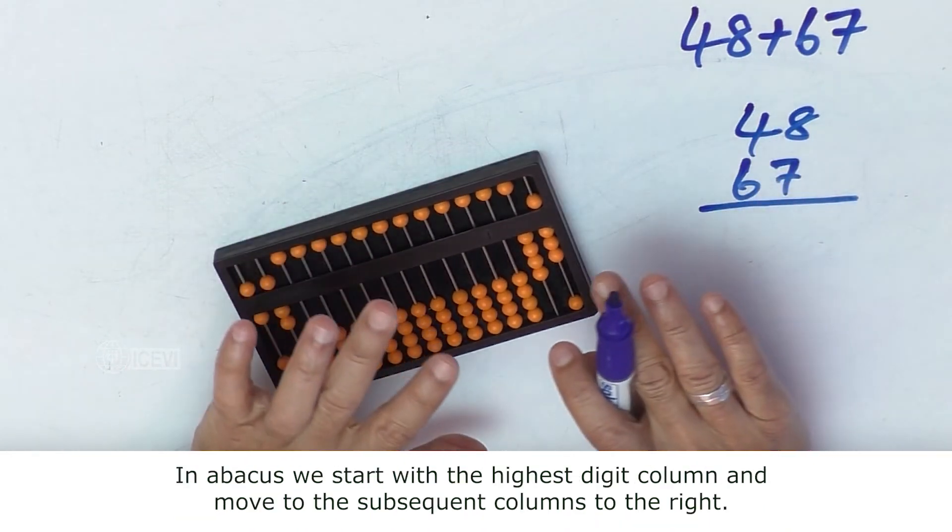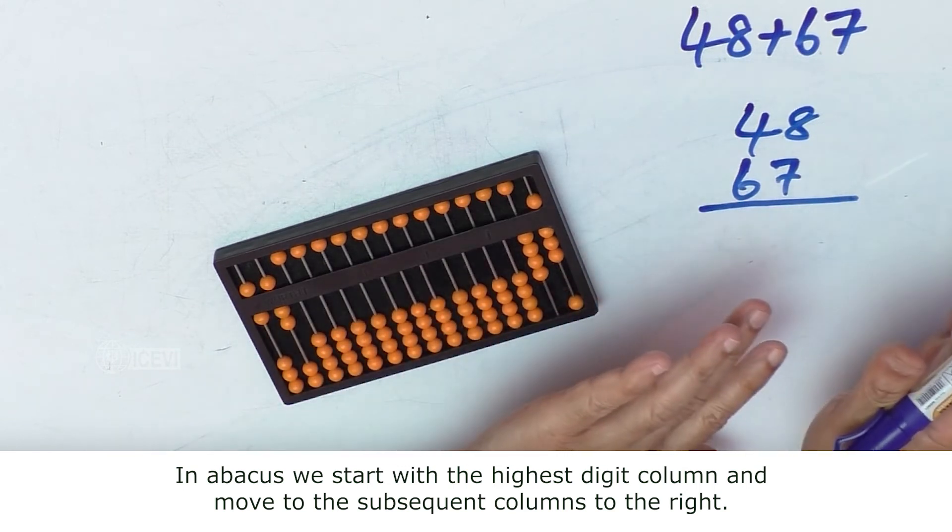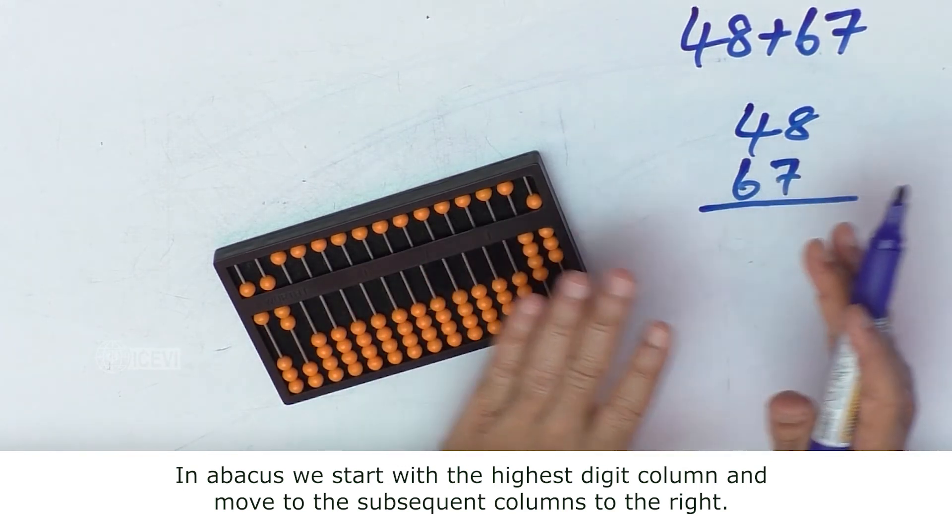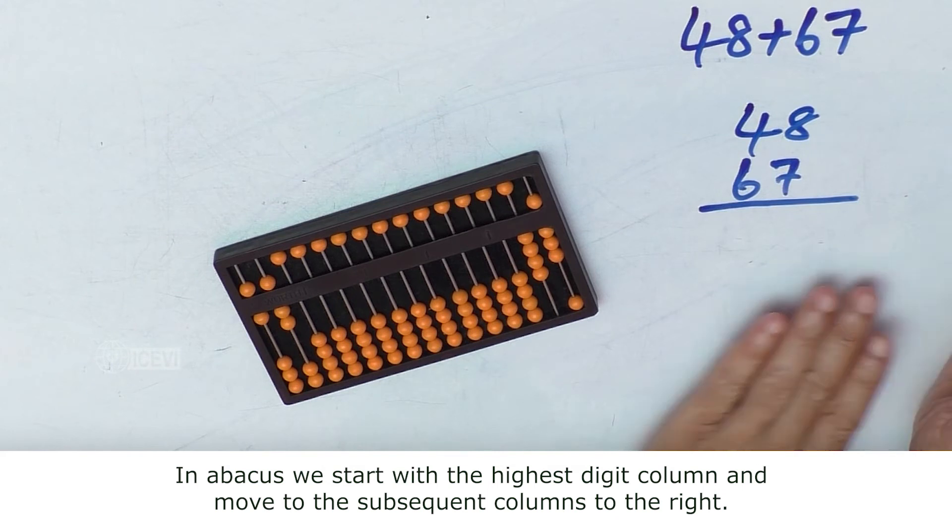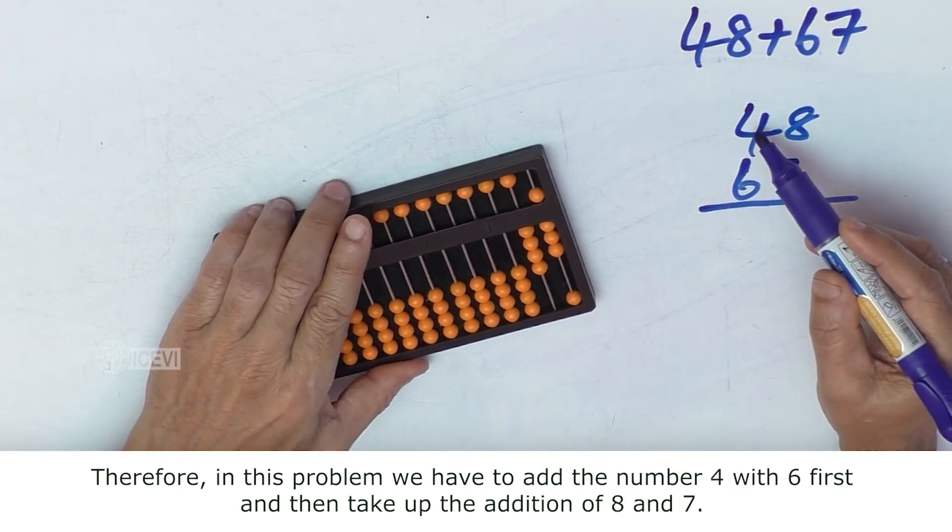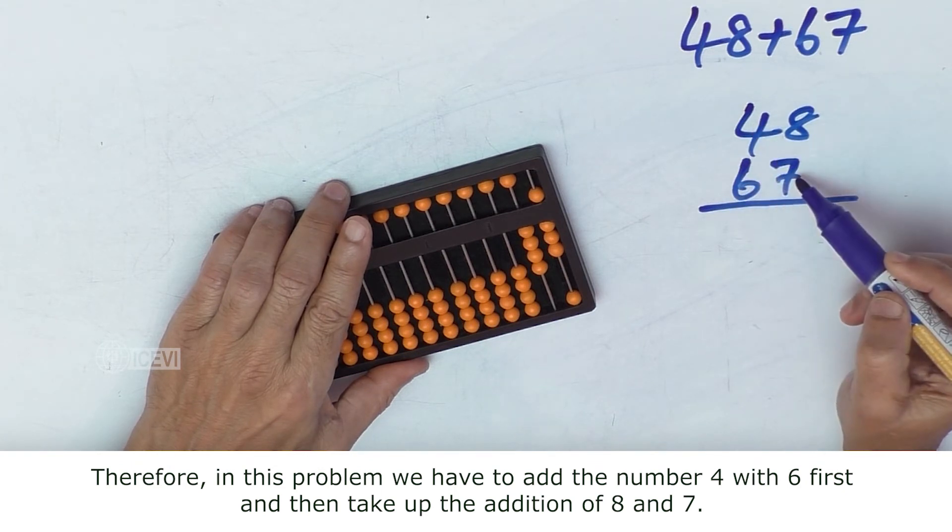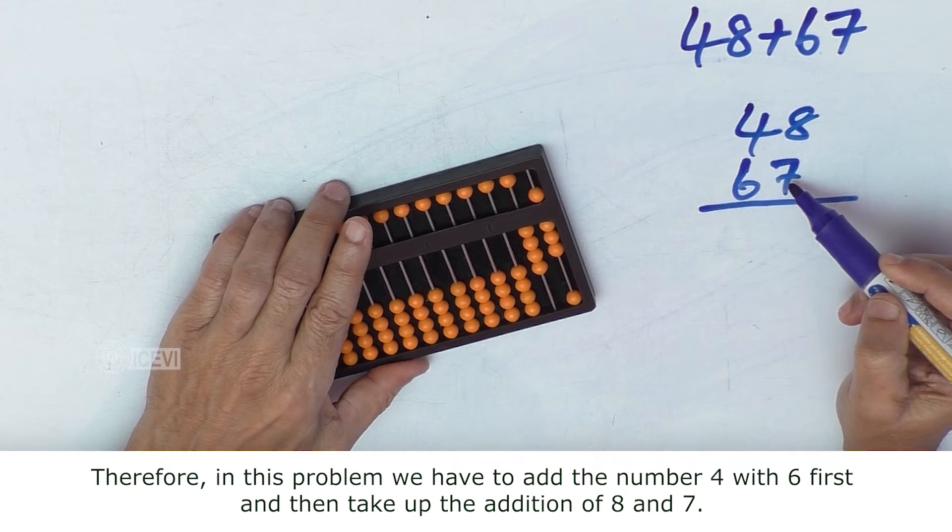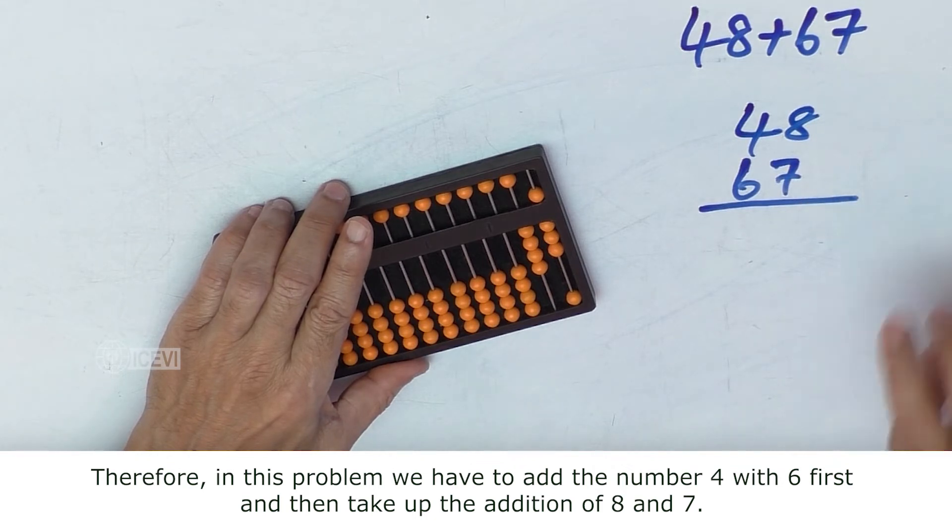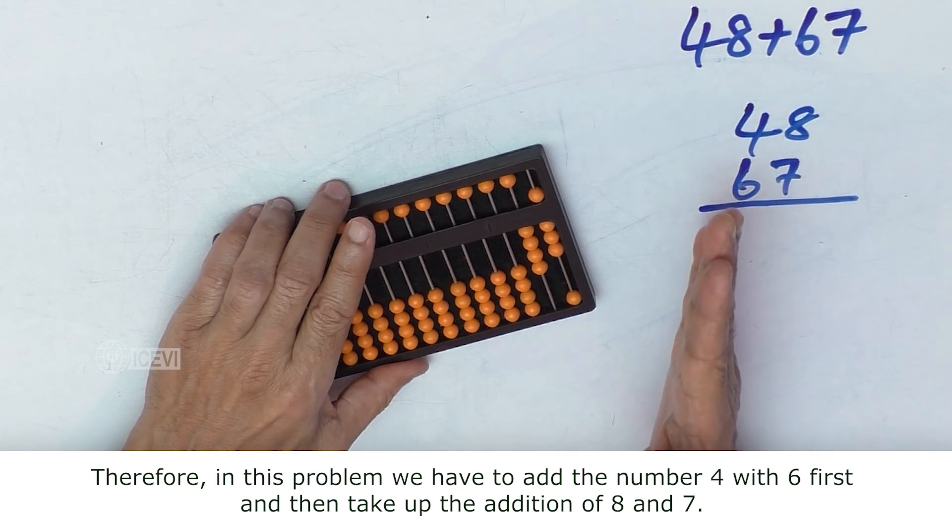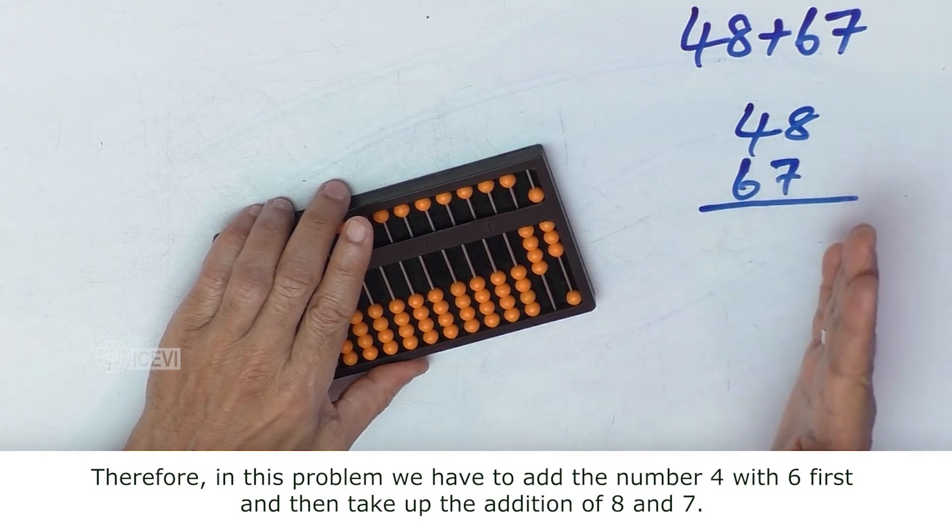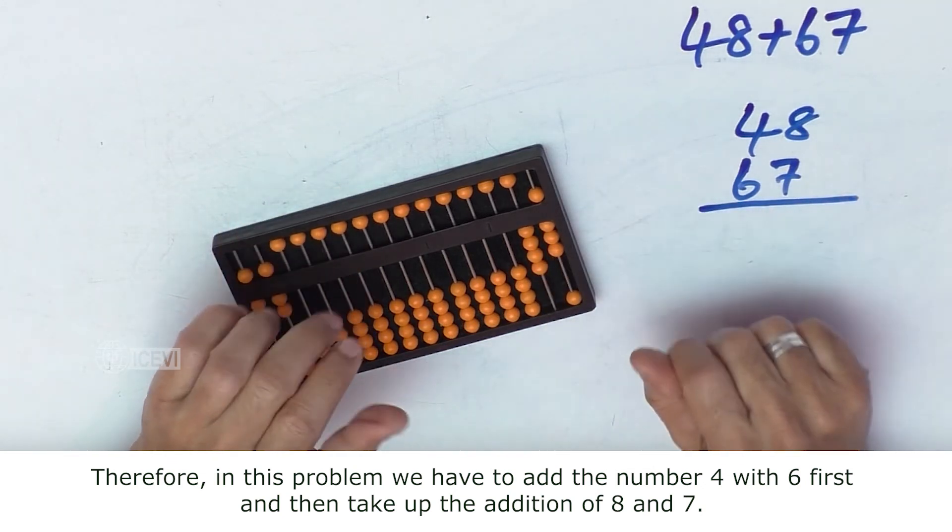In abacus, we start with the highest digit column and move to the subsequent columns to the right. That means we start with the operation of 4 plus 6 first, and then move to 8 and 7. Therefore, in this problem, we add 4 and 6 first, and then take up the addition of 8 and 7.